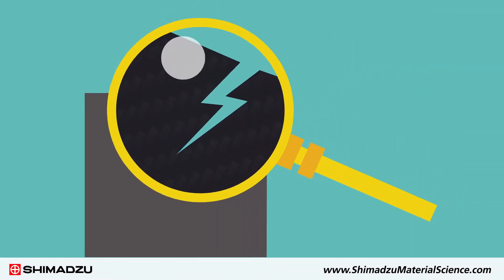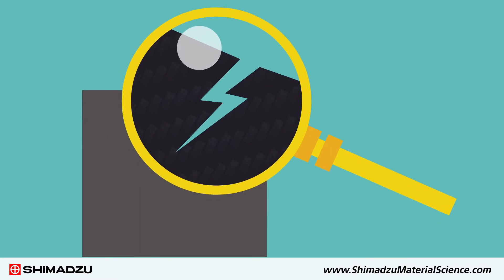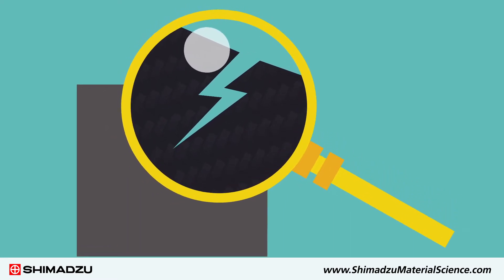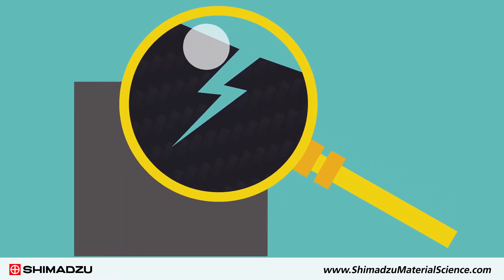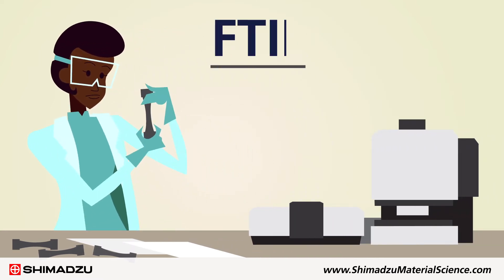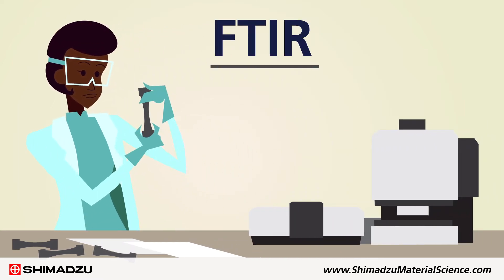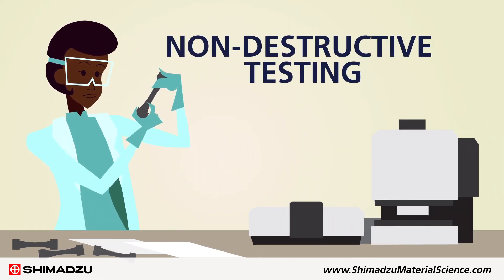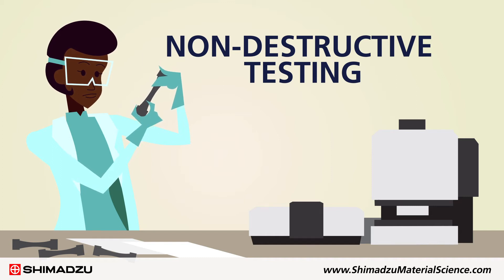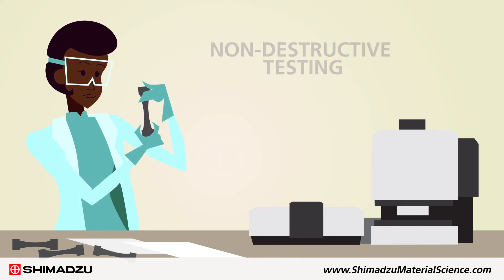There are many methods available for observing internal damage and analyzing chemical composition. Fourier transform infrared spectroscopy, FTIR, is a non-destructive testing method that may be used to measure the detailed chemistry of epoxy matrix curing.